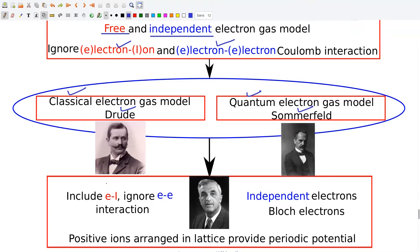At the next level, we remove the free electron approximation by including the electron-ion interaction. However, we continue with the independent electron approximation. Valence electrons are assumed to get detached from the atomic cores, consisting of nucleus and core electrons. Thus, atomic cores are positively charged ions and the valence electrons find themselves in a potential provided by the positively charged ions. In a crystalline solid, ions are arranged periodically in a lattice, so we solve the problem of electrons in a periodic potential.